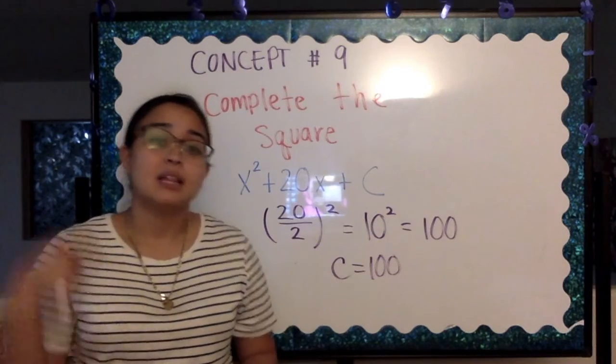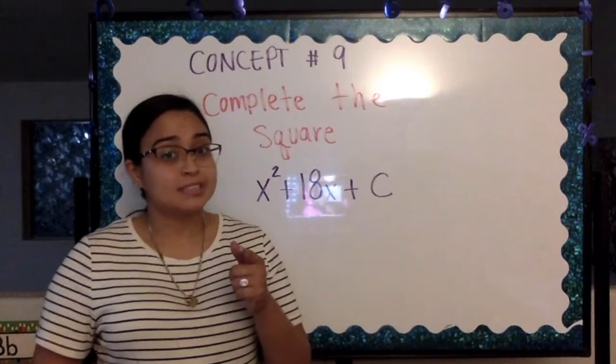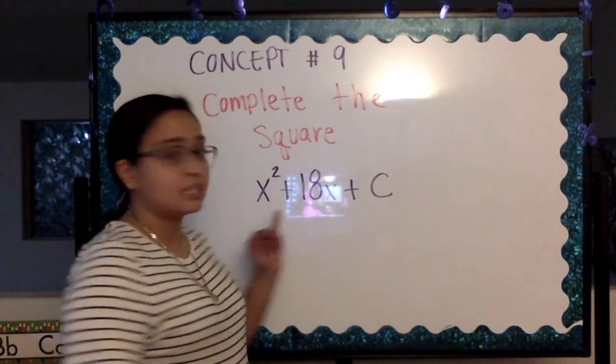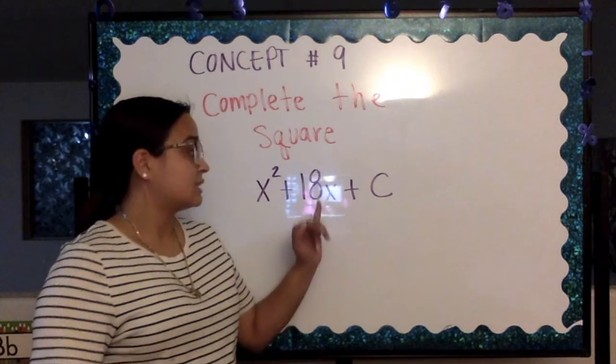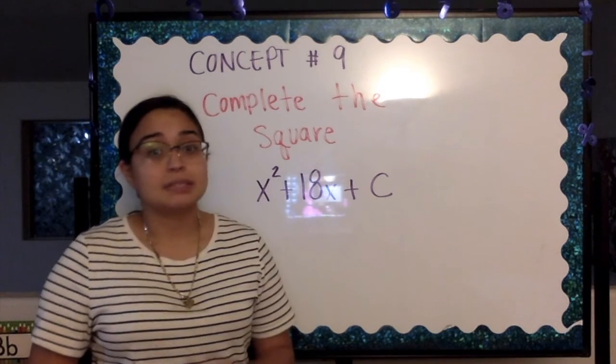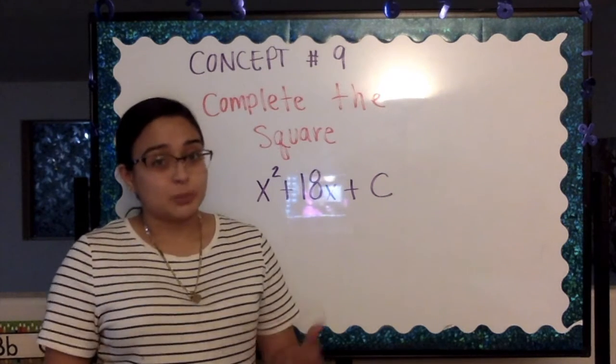Now, let's go into your assignment for today. For your assignment today, I want you to take this example which is x squared plus 18x plus c. Plug it in and follow the same steps I just took to solve for c and complete the square.